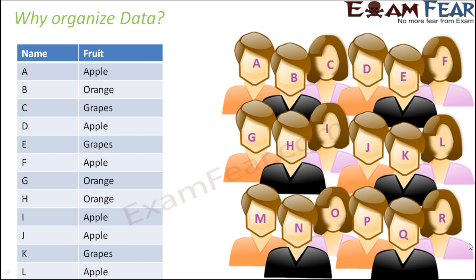So, what do we need to do? We need to organize the data, because organized data helps us to interpret the data. The information is obtained easily from organized data. Not only that, when you look at the screen, you see that there are certain data which gets repeated over and again. For example, apple — the favorite fruit apple — is not the favorite fruit only for A. It is a favorite fruit for D, also for F, also for I, J, and L. There are multiple people who said apple is their favorite fruit. So, here in this table, apple is data that is getting repeated again and again. We will organize them in a better way when we organize the data.